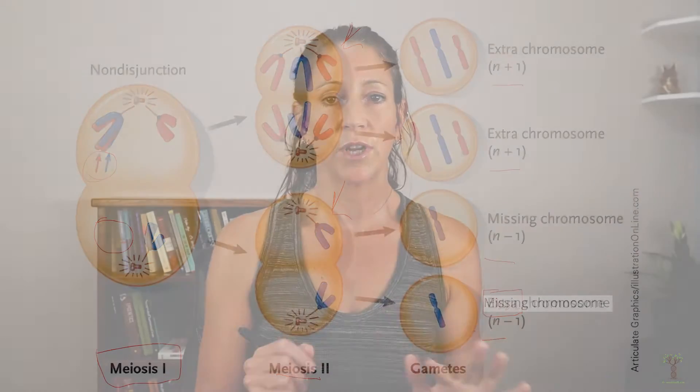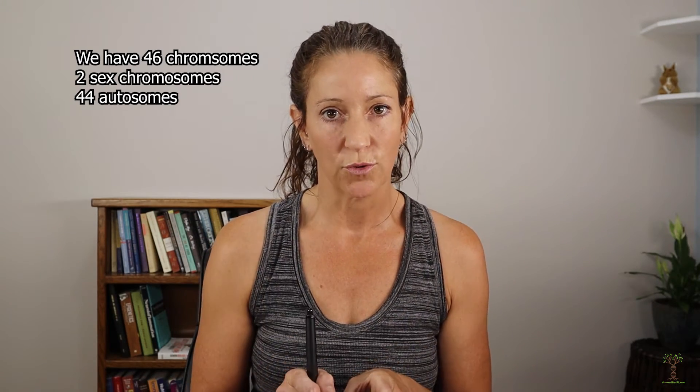Sometimes we can survive with chromosome non-disjunctions. I want to explain the difference between an autosome and a sex chromosome. We have 23 chromosomes that we got from mom and 23 from dad, so we have a total of 46. Two of those chromosomes are the sex chromosomes. If you're female,